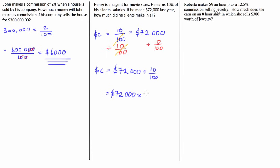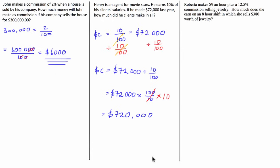When dividing by a fraction, division by a fraction is simply multiplication by the reciprocal of that fraction. So we have $72,000 times 100 over 10. Now 100 over 10 is just 10, so $72,000 times 10 is going to be $720,000.